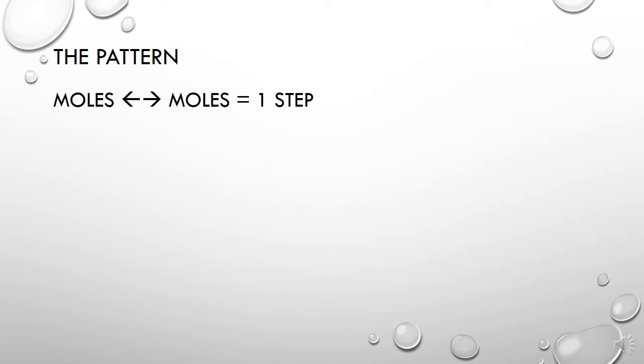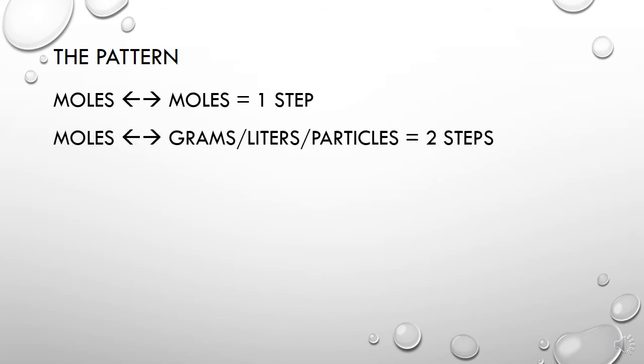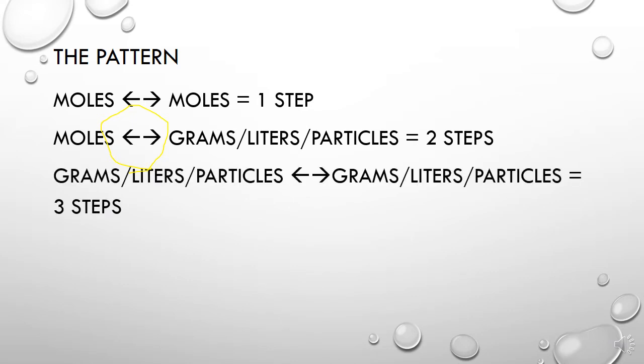With stoichiometry problems, there is a definite pattern to how these things work. If you're given a question that gives you a given amount in moles and they're asking for moles, it's a one-step problem. If it's moles to grams, liters, or particles - any of those three - it's going to be two steps. Also, if you're going from grams to moles back the other way, it's also going to be two steps. The double arrows here show you that either way, going from moles to grams or grams to moles, you're going to need two steps. If you're going from grams to grams, or grams to liters, or particles to liters - any of those three to any of those three - you're going to have three steps involved.